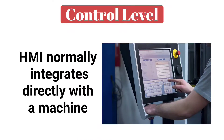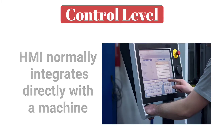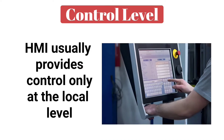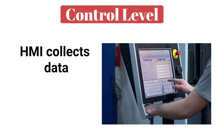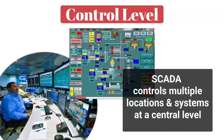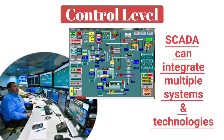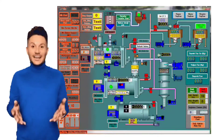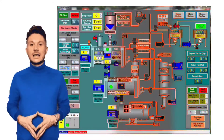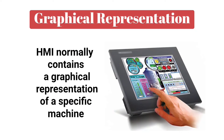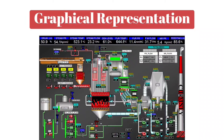Regarding control level: HMI normally integrates directly with a machine and provides control only at the local level. HMI collects data but in a limited way. While SCADA controls multiple locations and systems at a central level, SCADA can integrate multiple systems and technologies, and does extensive data collection and analysis. Regarding graphical representation: HMI normally contains a graphical representation of a specific machine, whereas in SCADA, multiple machines are represented for a broader view.